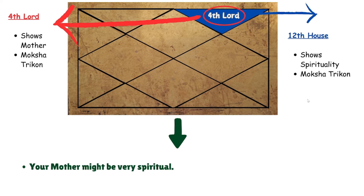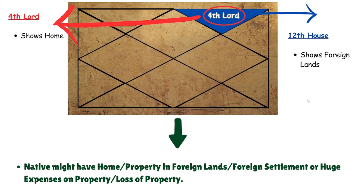The fourth lord shows mother and is part of the mokshatrikon, and the twelfth house also shows spirituality and is part of the mokshatrikon, so your mother might be very spiritual. The fourth lord also shows home and the twelfth house is a house of foreign lands, so there is a possibility that you might purchase your home or have your property in foreign lands.